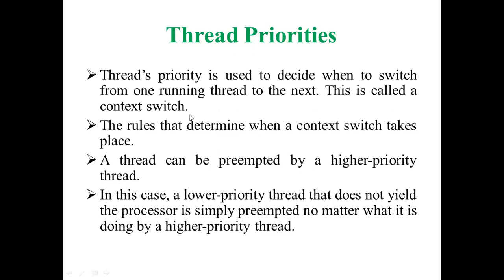Thread priority is used to decide when to switch from one running thread to the next — this is called a context switch. For example, if thread one is running and thread two has the highest priority, then thread two needs to take hold of the CPU. The CPU should switch off the current thread and give priority to the highest priority thread — that is what we call a context switch.